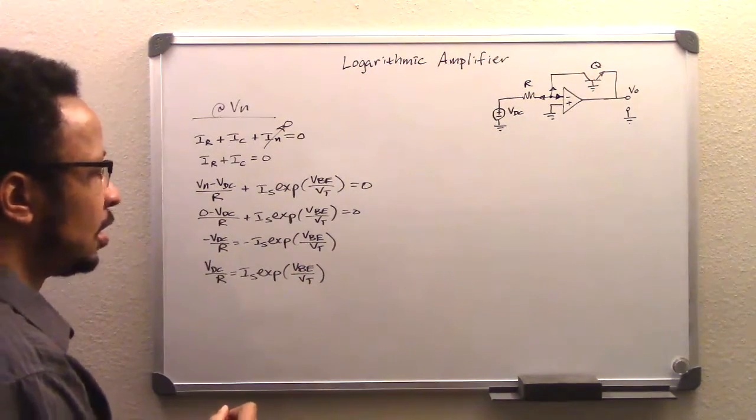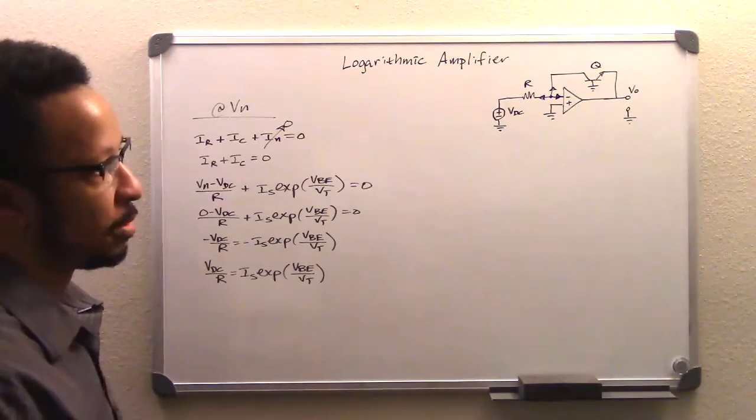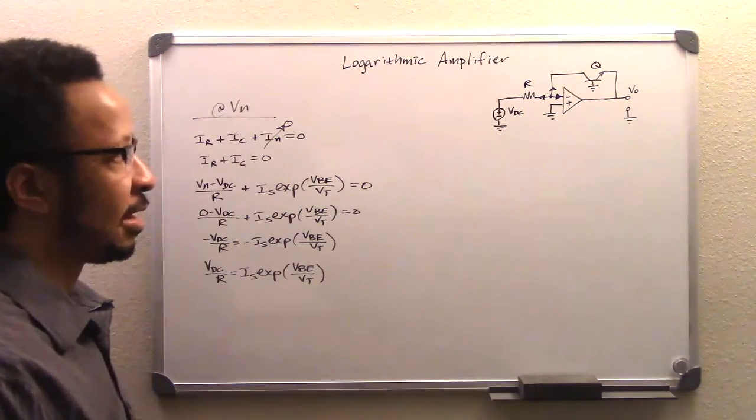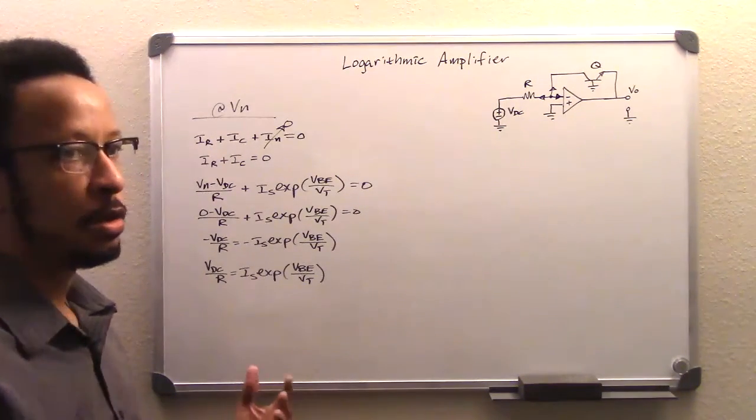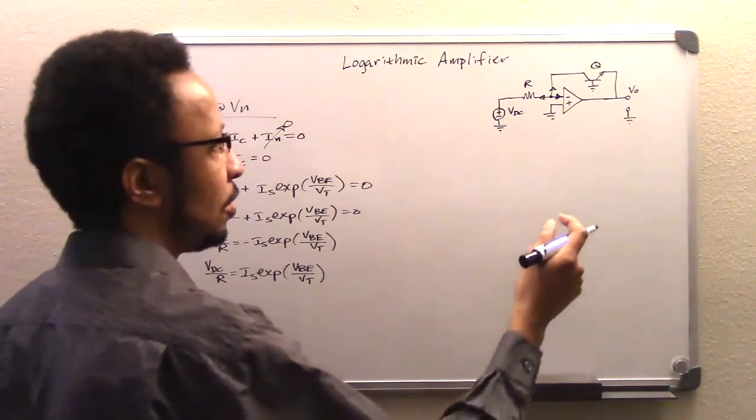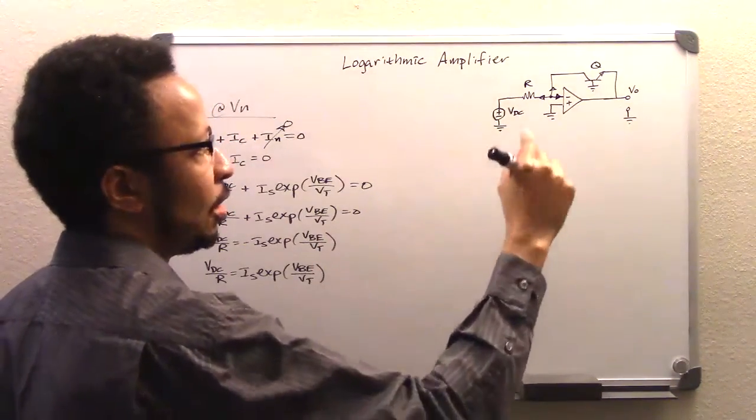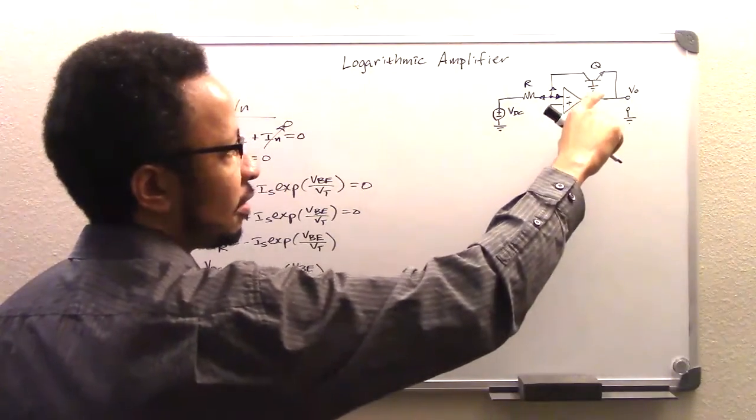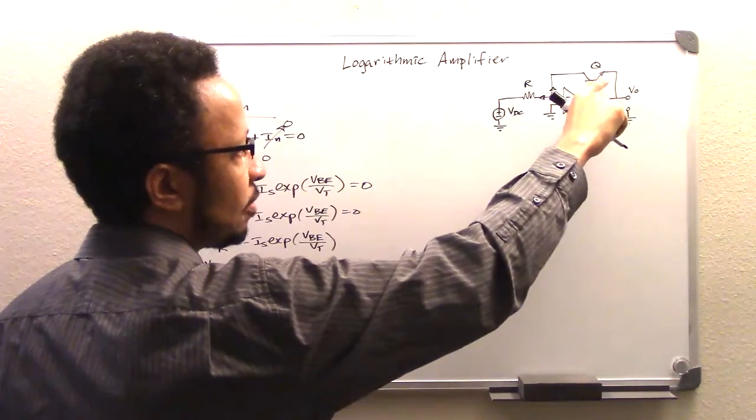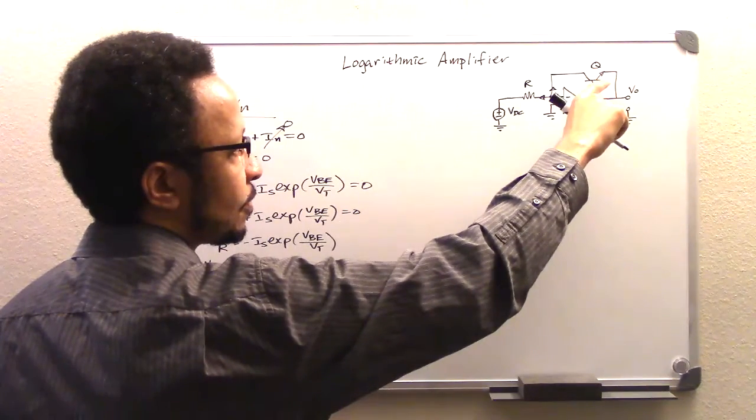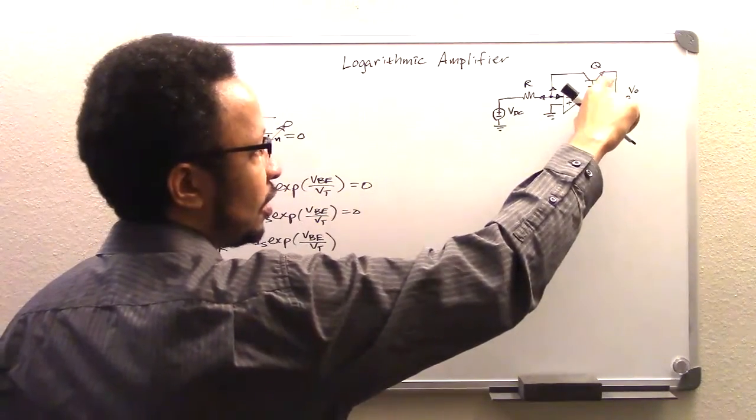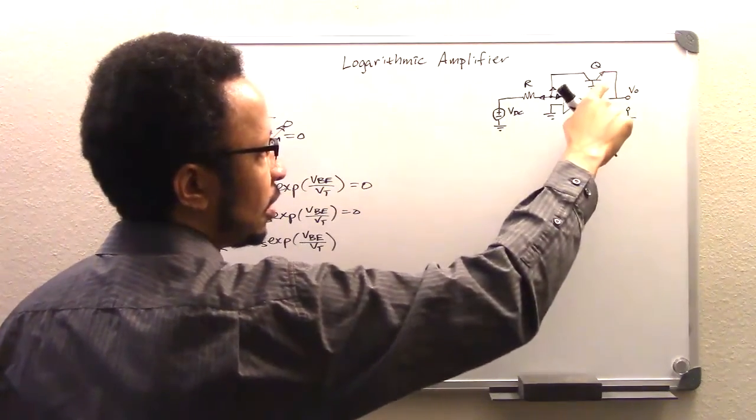Now, the very next step is a step of taking notice of equivalences. And so what we're going to notice here is that VBE, which is defined as the voltage between the base here and the emitter here, is equivalent to this node here, which is Vout and ground.